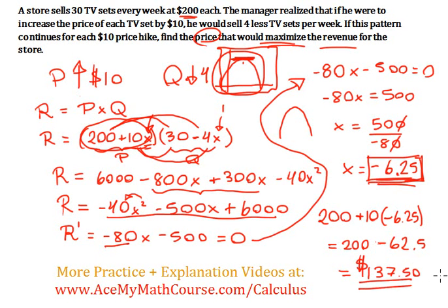You can try different price combinations. None of them, according to this revenue function, will provide us with greater revenue. So that's it.